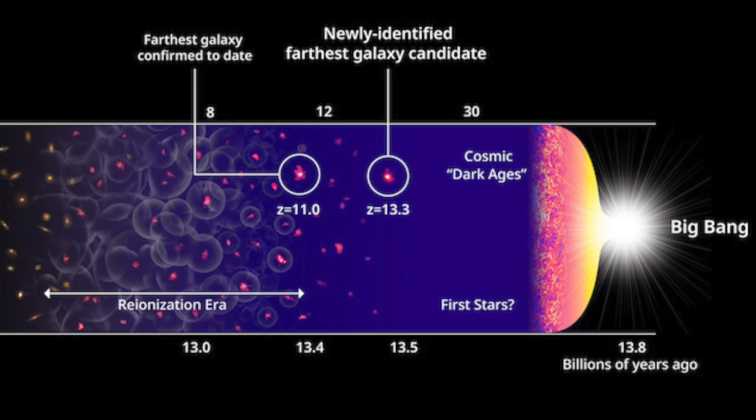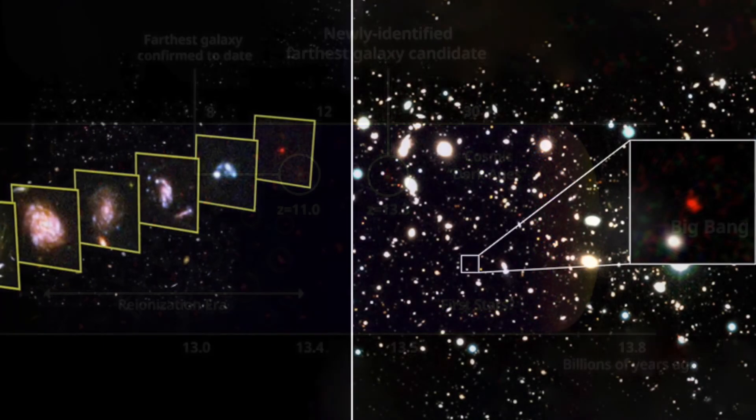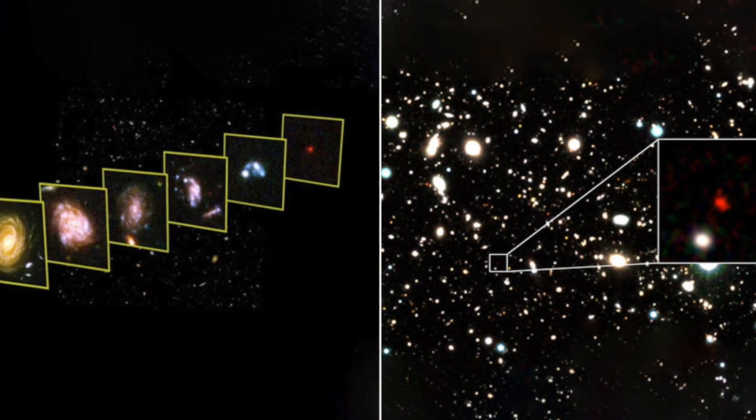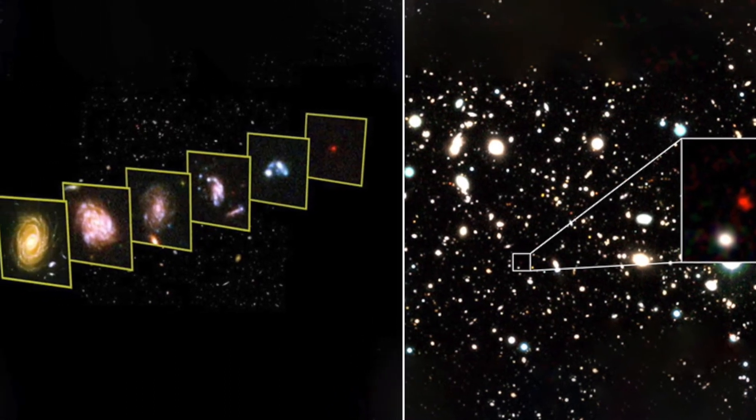But upon close inspection, astronomers discovered that the galaxy candidate was producing more than 100 stars annually – a rate 10 times higher than typical starburst galaxies.